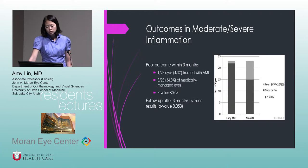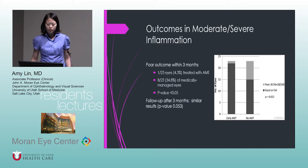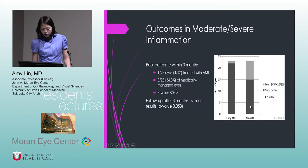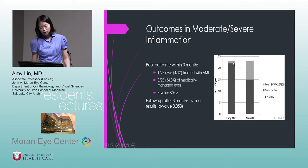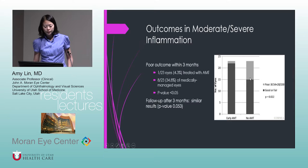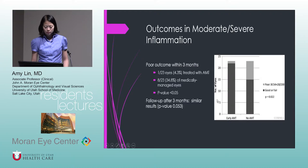Looking at patients with moderate to severe inflammation: there were 23 eyes treated with amniotic membrane and 23 medically managed. Patients who had early amniotic membrane transplant mostly had good or fair outcomes — only one eye had a poor outcome. Whereas among patients with no amniotic membrane transplant, eight eyes did not do as well, falling in the poor category. This was within three months; after three months, results were not as statistically significant.